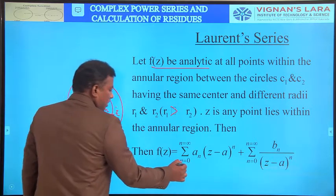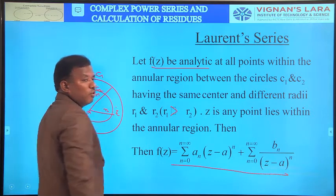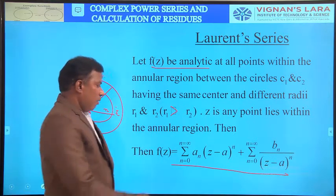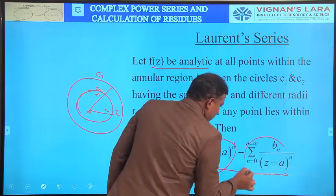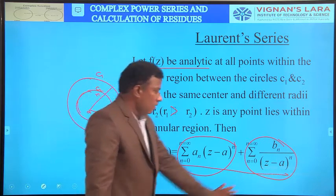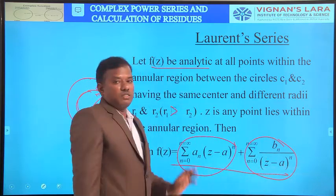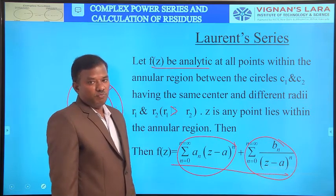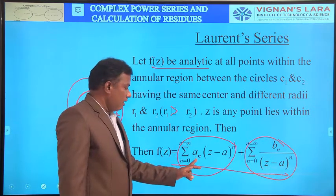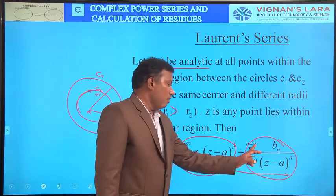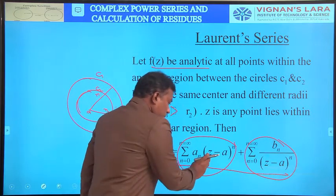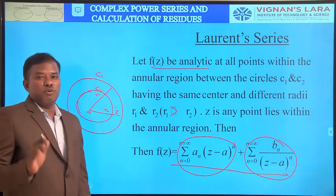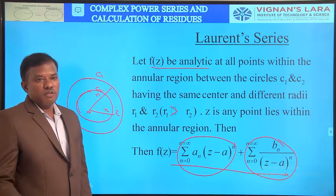Then f(z) equals sigma n=0 to infinity of a_n times (z minus a)^n, plus sigma n=0 to infinity of b_n divided by (z minus a)^n. The first sum represents positive powers of z minus a, and the second represents negative powers of z minus a. If b_n equals zero, the second term vanishes and it reduces to the Taylor series.